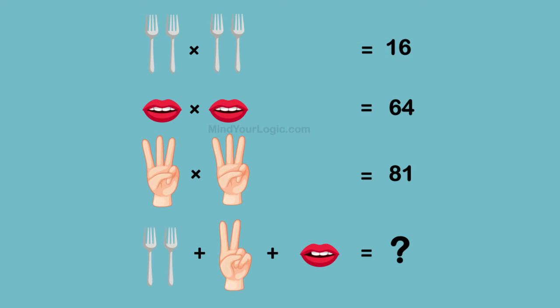Here is the math brain teaser, in which fork, mouth, and hands with fingers are given in equation form. Solve the equations and find the individual value of them, which helps you to decode the final equation.